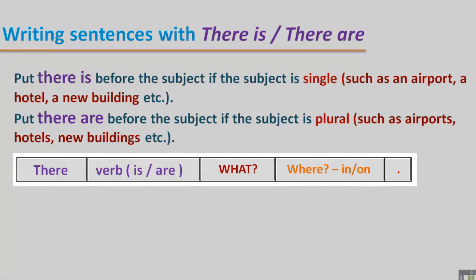In this structure, we begin the sentence with there, and then we have to decide: if the subject is singular, then we put is, and if the subject is plural, then we put are. Then after what - what are these things or what is this thing - we have to write the information about where.